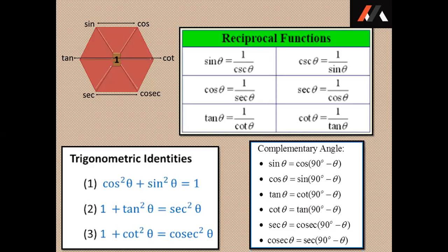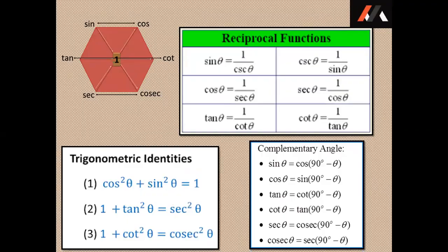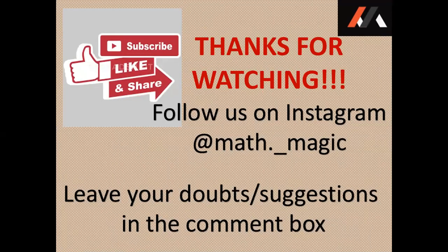Now let us revise the trigonometric identities. Sin square theta plus cos square theta is equal to 1. Tan square theta plus 1 is equal to sec square theta. 1 plus cot square theta is equal to cosec square theta. Don't forget to follow us on Instagram for regular updates about the videos. Leave your doubts and suggestions in the comment box. Thank you.